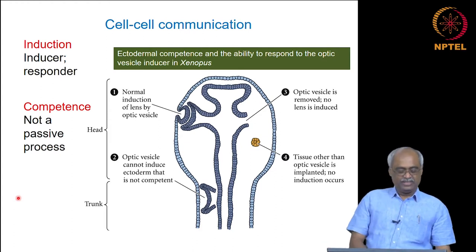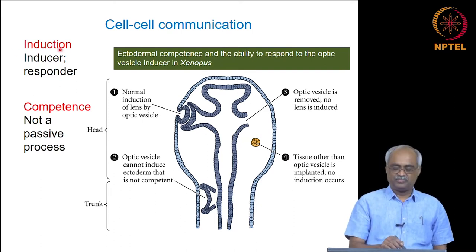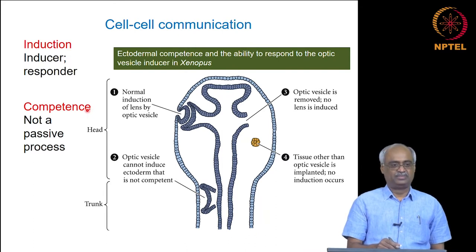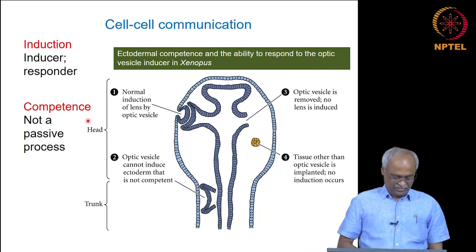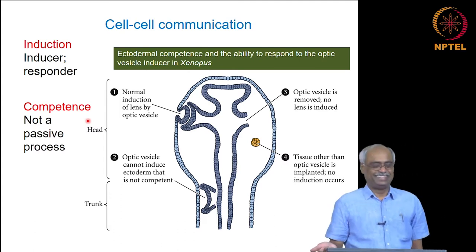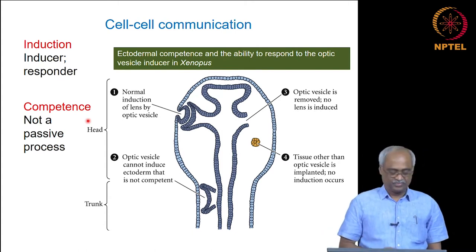There are two important concept-defining words: one is induction, and the underlying molecules are called inducers. Then we have something called competence. For example, I can teach you developmental biology, but unless you already know high school level education you are not going to be able to follow. So you have to be competent to be induced — that is what competence means here.